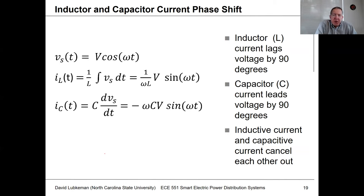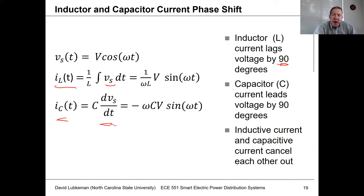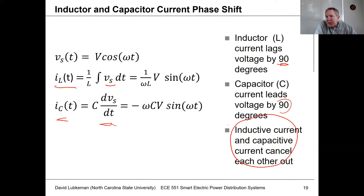Looking at the phase relationships: since inductor current is related to voltage by an integral and capacitor current by a derivative, for a sinusoidal forcing function there is a 90-degree relationship between voltage and current for each element type. Inductive current lags the voltage by 90 degrees, while capacitor current leads the voltage by 90 degrees. This creates the possibility of making these two currents cancel out, which is what capacitor applications are all about.